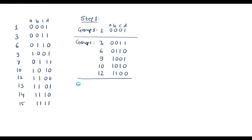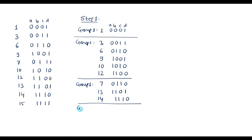Group 3 contains numbers having three 1s: minterm 7 (0111), 13 (1101), and 14 (1110). Group 4 contains numbers having four 1s — here we have only one number, which is 15 (1111).